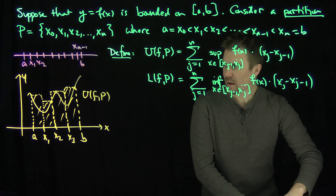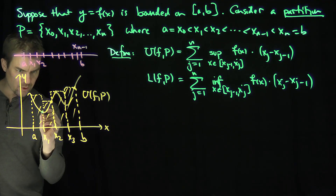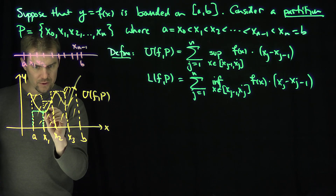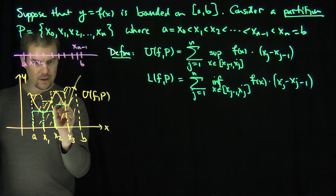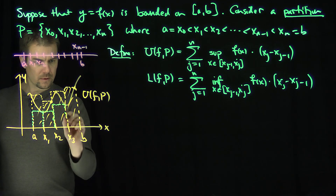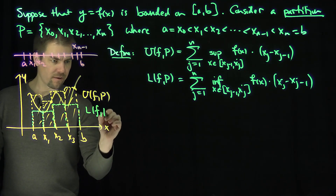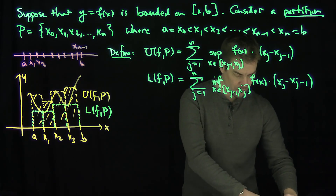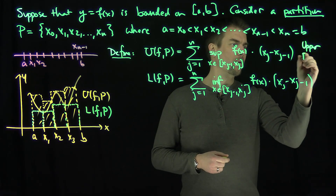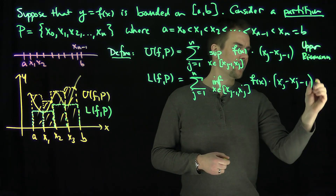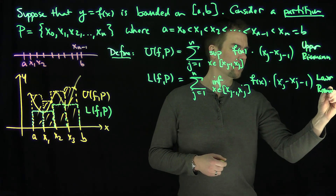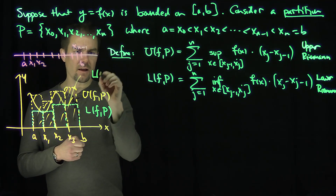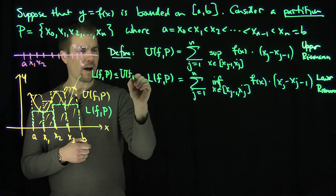Now what will L(f, P) do? It gives the smallest value on each interval. The green rectangles correspond to the infimum on each subinterval, giving a lower set of rectangles. These U(f, P) and L(f, P) are called the upper and lower Riemann sums. From the geometry, it is clearly the case that L(f, P) ≤ U(f, P).